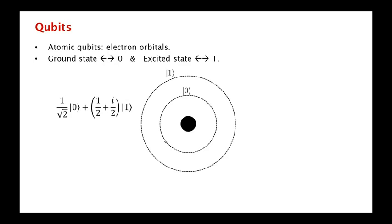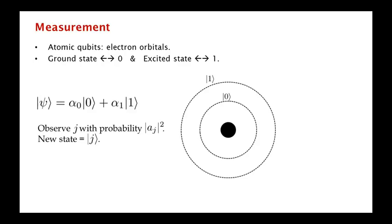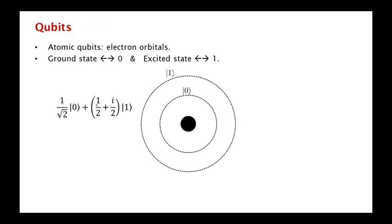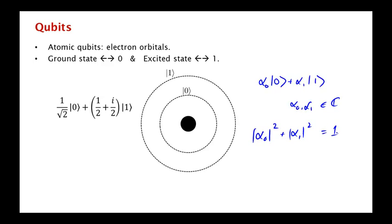But of course, in quantum mechanics the electron doesn't make up its mind whether it's in the ground or excited state in general, and it can be in a superposition of the ground and excited state, where it has some complex amplitude of being in the ground state and some other complex amplitude of being in the excited state. These amplitudes are complex numbers and they are normalized. In general, the state is alpha-zero |0⟩ plus alpha-one |1⟩ where alpha-zero and alpha-one are complex numbers and the sum of the squares of their magnitudes adds up to one.